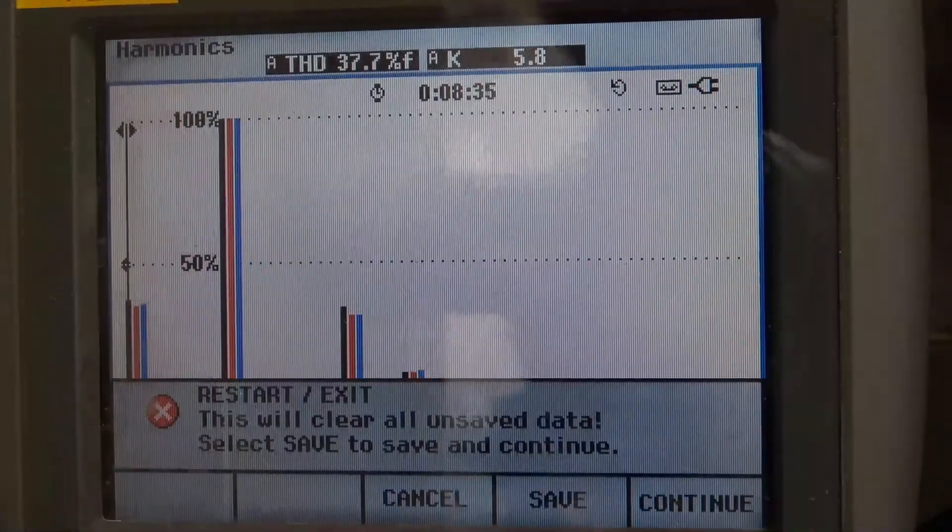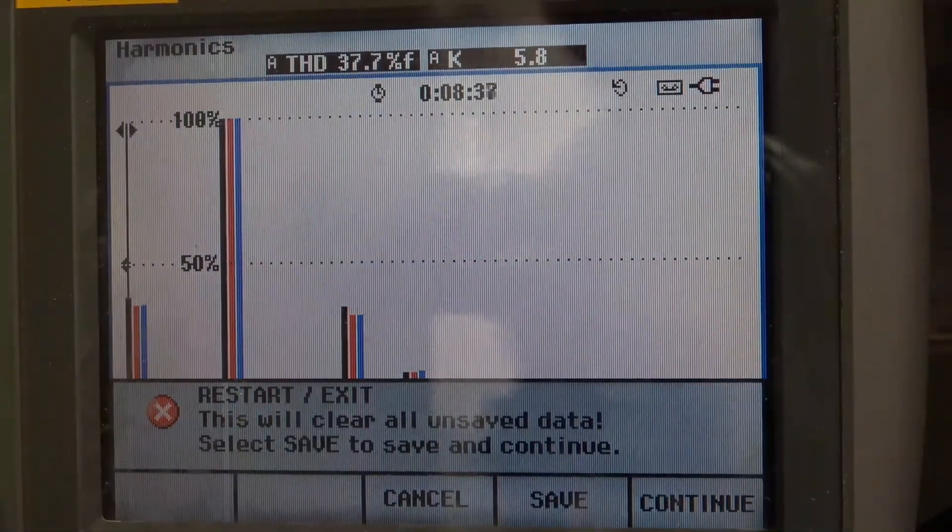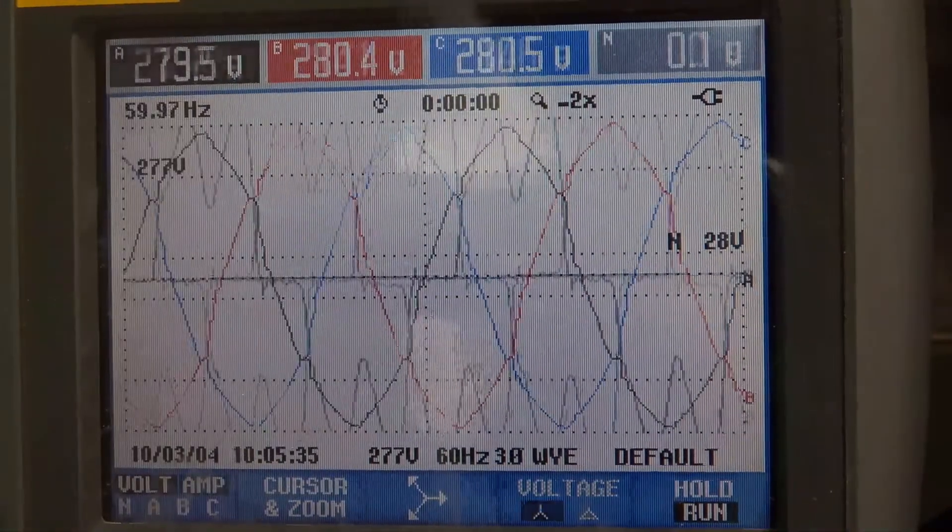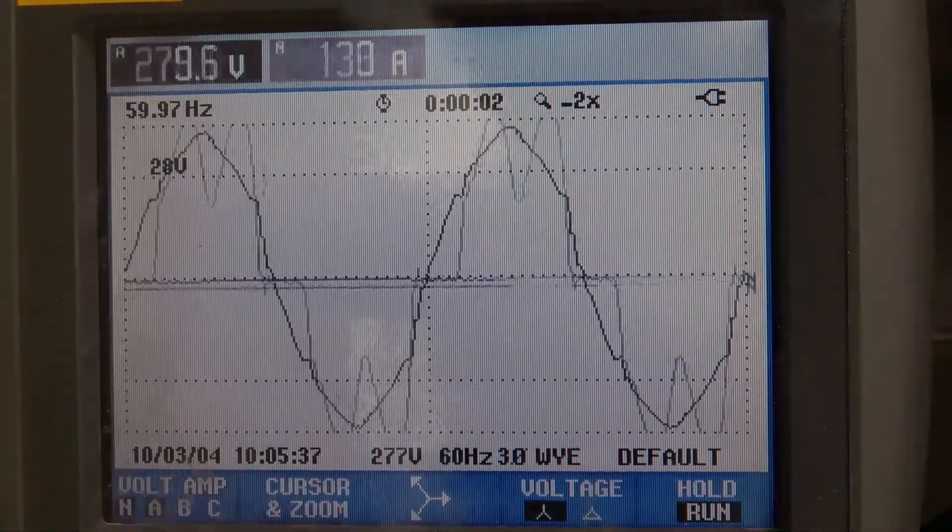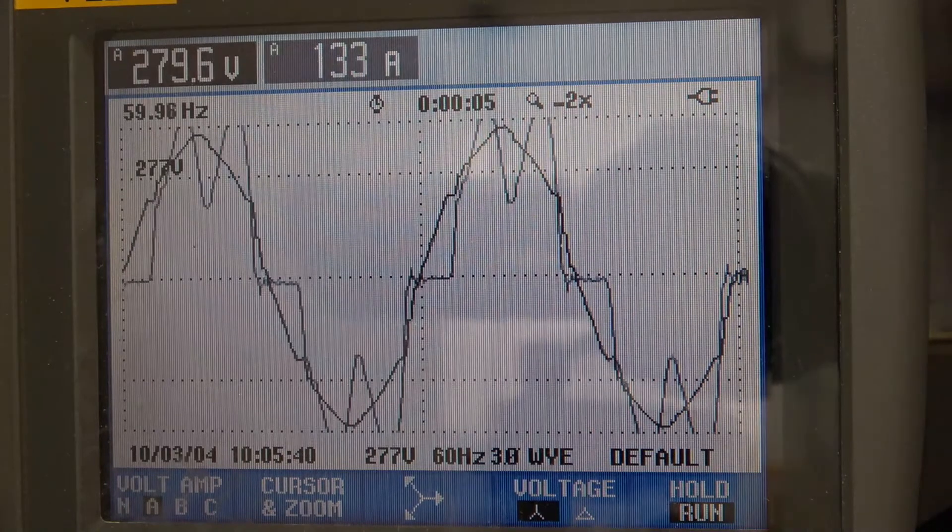Now we'll take a look at the waveform for voltage and current and then I'll come over and turn on the active harmonic filter.